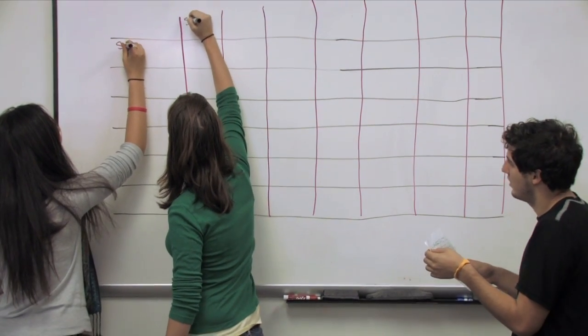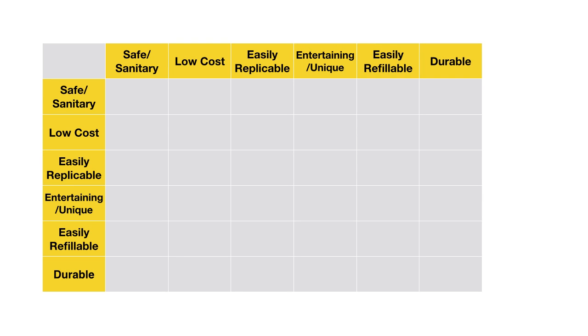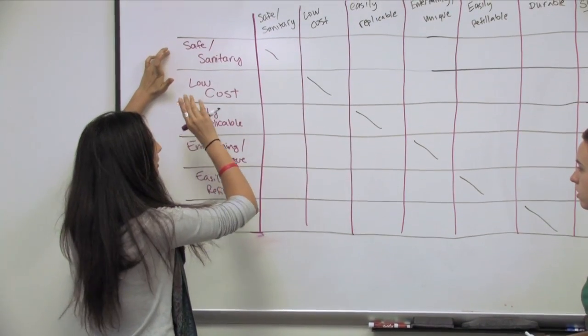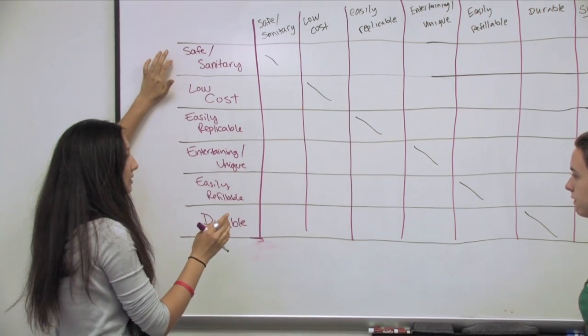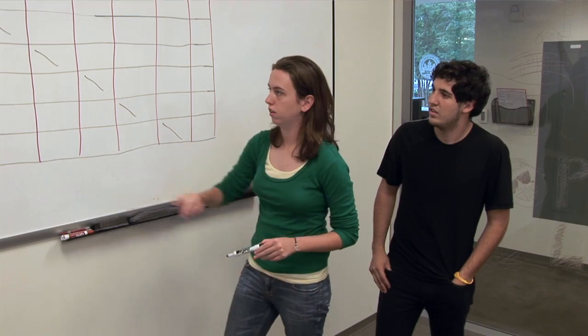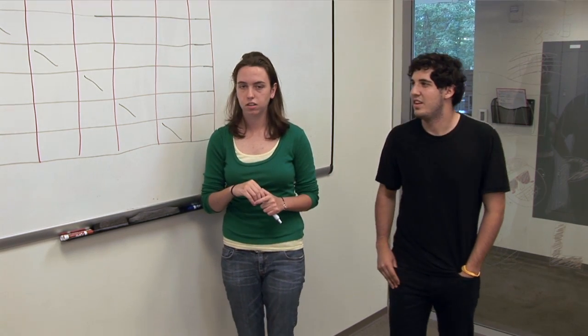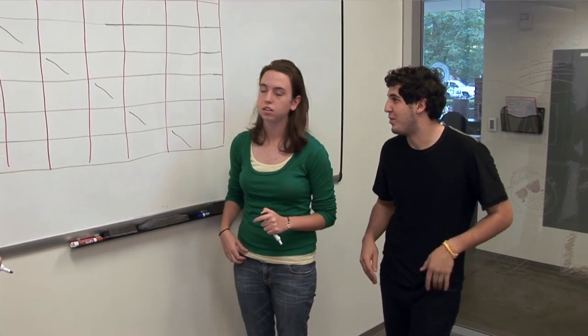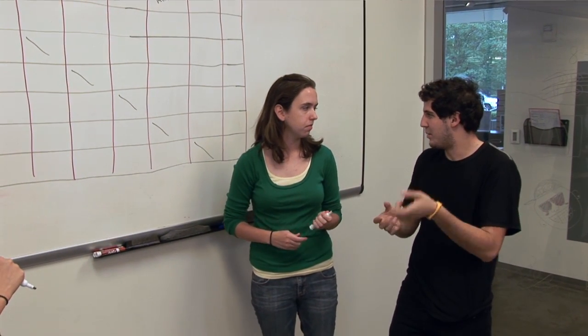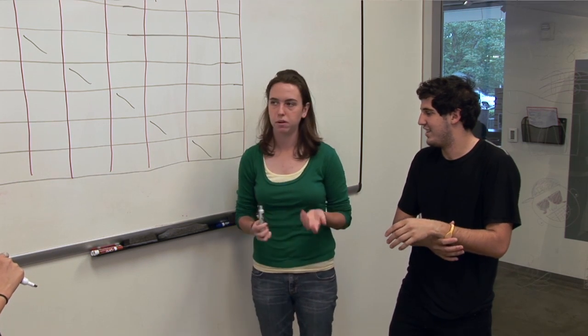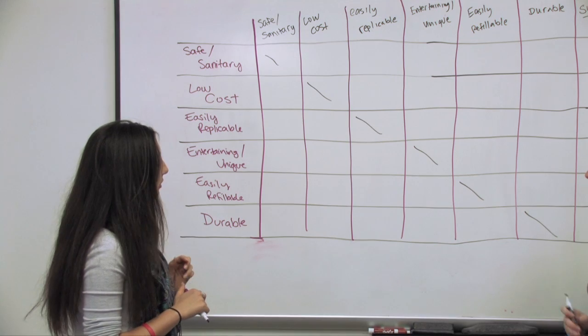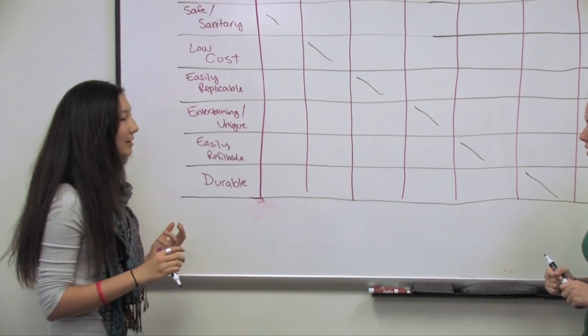Okay so let's start off by writing out the objectives. The first one is safe slash sanitary. Oh and you can't compare an objective to itself so these are kind of null. So I guess we should start by comparing safety to all these other design criteria. If safety is more important than say low cost then we're going to put a one. Alright so safe and sanitary versus low cost. I think safe and sanitary is probably more important. The first requirement for being in the bathroom is that it has to be sanitary, you can't cut yourself on it. And there might be codes that they can't install it if it's not safe.